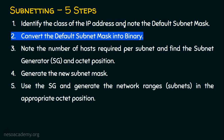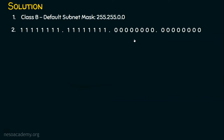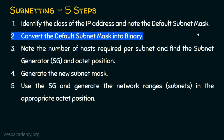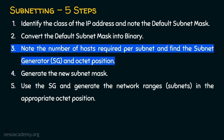Let's now move on to step number two. Here we are going to convert the default subnet mask identified in step one into binary. When we convert this into binary, we get this result: because the first and second octets are 255, all bits in the first two octets are ones in binary, and the remaining two octets are zeros. Step number two is done.